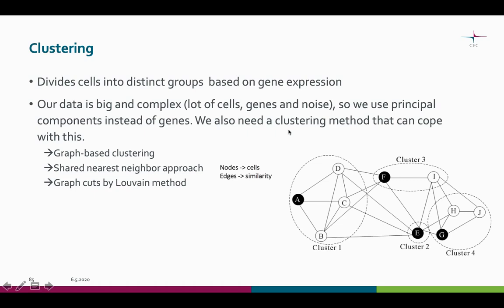The main purpose of the clustering step is to divide the cells into distinct groups based on their gene expression. Our data is big and complex — it has lots of cells, lots of genes, and lots of noise. So instead of using genes for the clustering, we use the principal components. We also need a clustering method that can cope with these things.